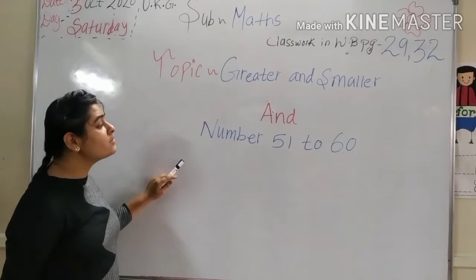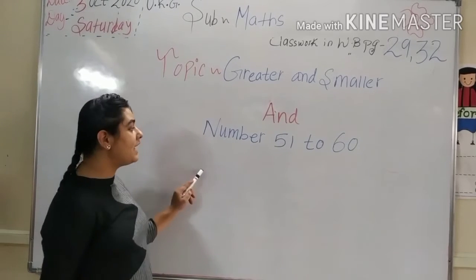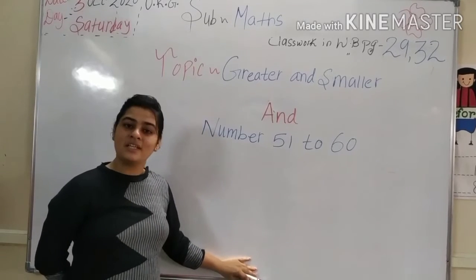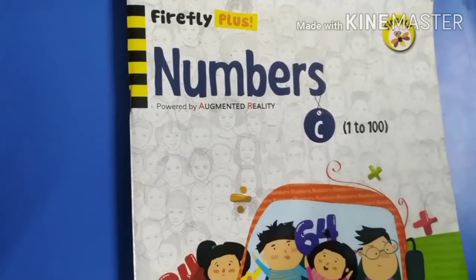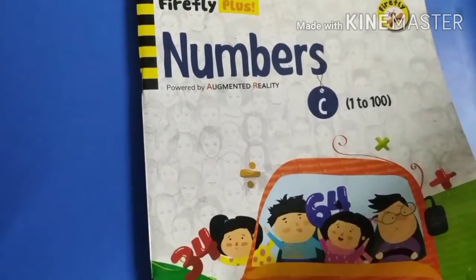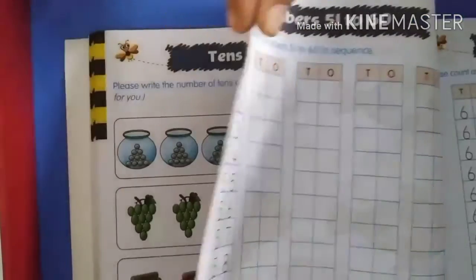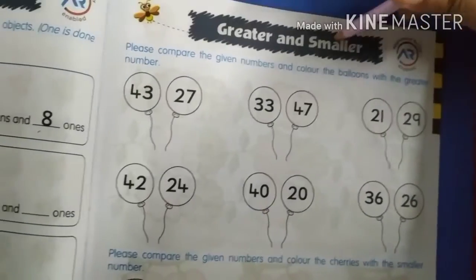And our next topic, number 51 to 60. Jo hamaara 32 pe class work hai, uska topic hai number 51 to 60. We will learn 51 to 60 numbers. Now kids, take this book and open page number 29 first. And second, page number 32. This is also your class work page — numbers 51 to 60 and greater and smaller.